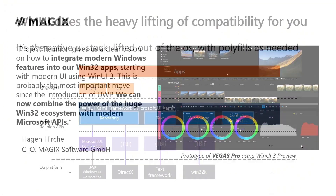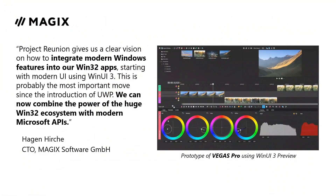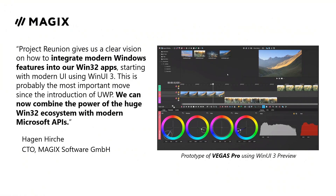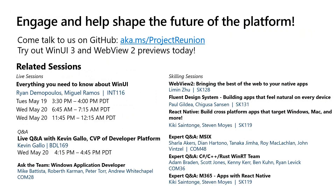We're excited about what partners are starting to do even with the previews. One I'd like to highlight is Magix — a company that makes user-friendly multimedia software since 1993, with developers in Europe, the US, and China, making apps like Vegas Pro. Their most successful apps are C++ Win32 apps with low-level optimizations and a complete ecosystem of third-party APIs and libraries. Project Reunion and WinUI 3 are letting them integrate modern Windows features into those Win32 apps, combining the power of the huge Win32 ecosystem with modern APIs. Here you can see a prototype of what they're starting to do with the WinUI 3 preview — for example, new color controls in their app.